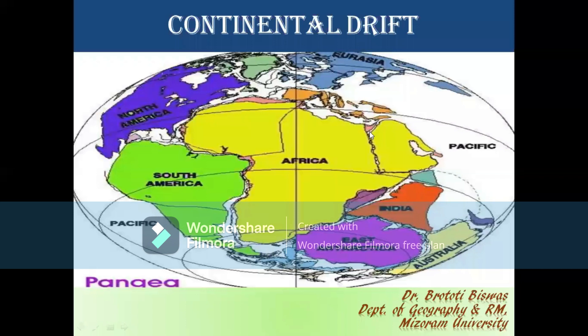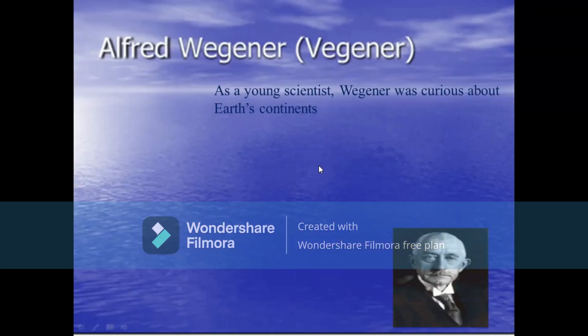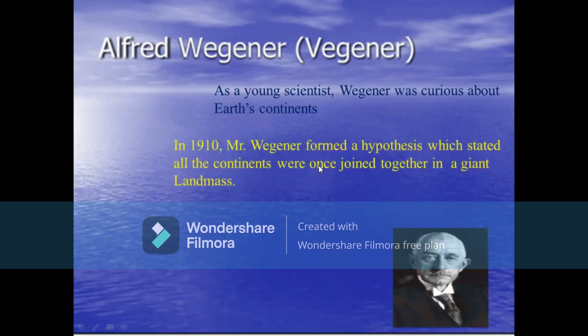Hello students, today we will see another topic: the Continental Drift theory. Alfred Wegener had given this concept of continental drift. As a young scientist, he was quite curious about the earth's continents. In 1910, Alfred Wegener formed this hypothesis. He stated that all the continents were once joined together in a giant landmass, which he named Pangaea.